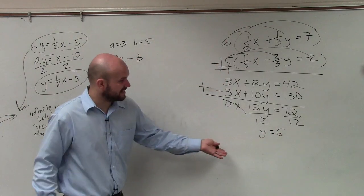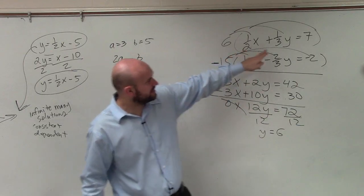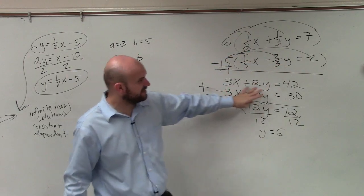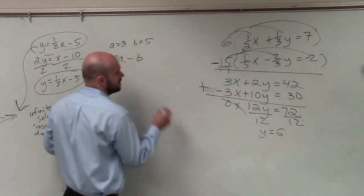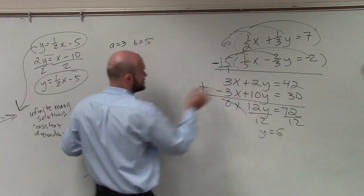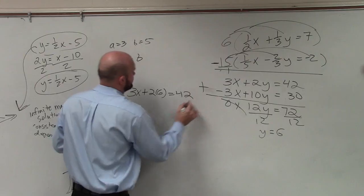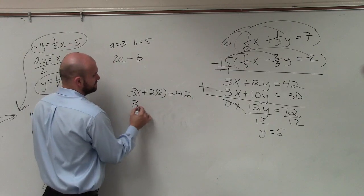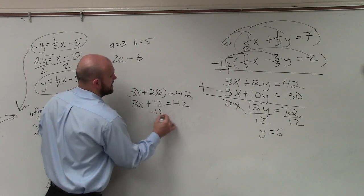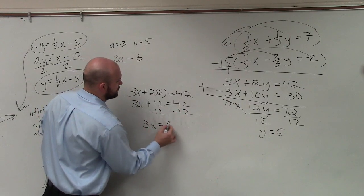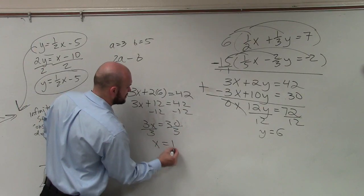OK. So now I know the value of y is 6. And then to plug that in, you could plug it into one of these equations if you like, or you could plug it into one of these, which you probably would prefer, right? No fractions. So we know y is equal to 6. Let's plug it into this one. 3x plus 2 times 6 equals 42. 2 times 6 is 12. Subtract 12. 3x equals 30. Divide by 3. x equals 10.